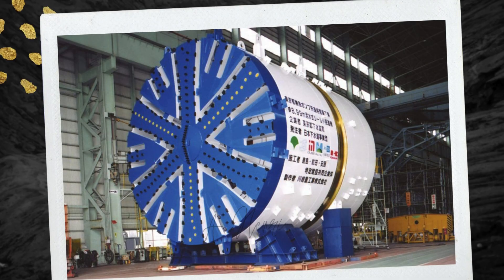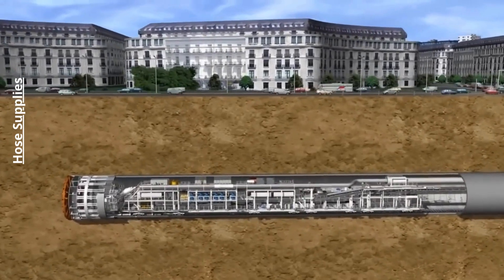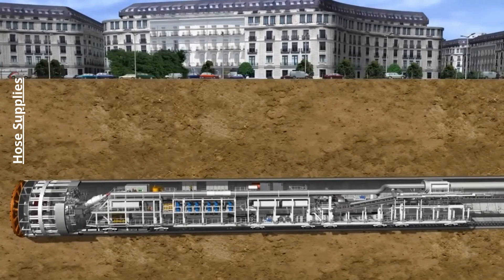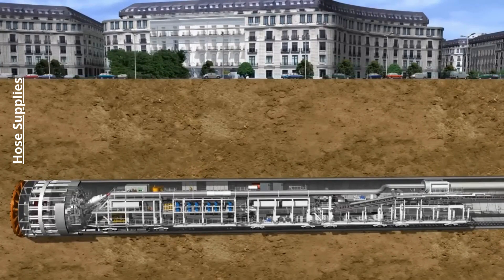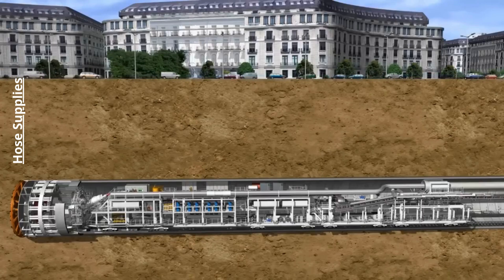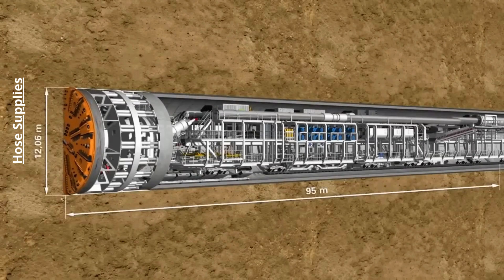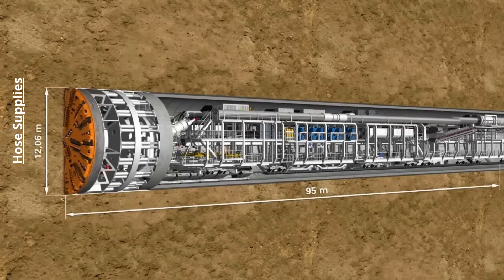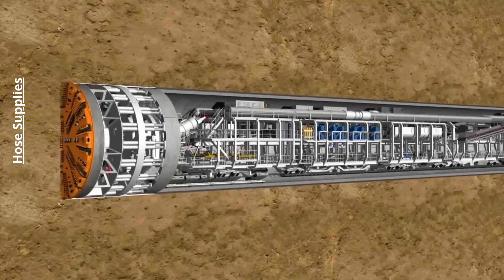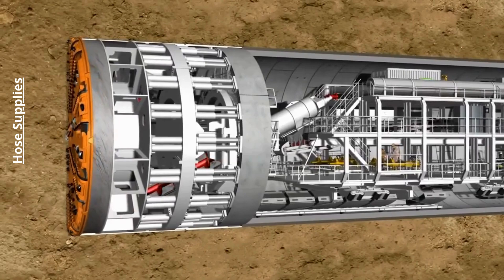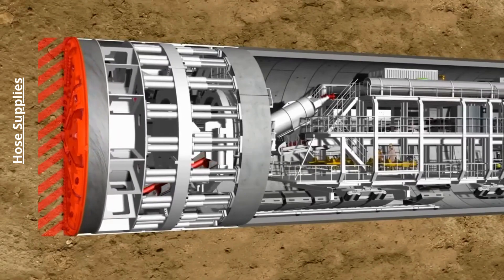A TBM consists of a cylindrical shield equipped with a rotating cutting head at the front, designed to bore through rock or soil. As the TBM advances, it supports the tunnel structure by installing precast concrete segments behind the shield to form the tunnel lining, creating a safe and stable environment for workers.